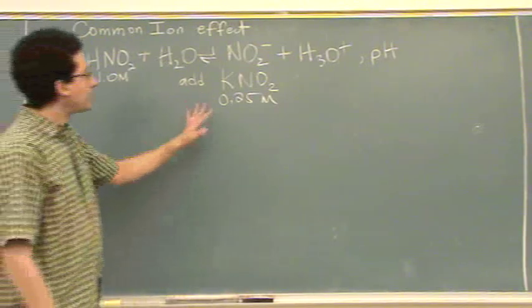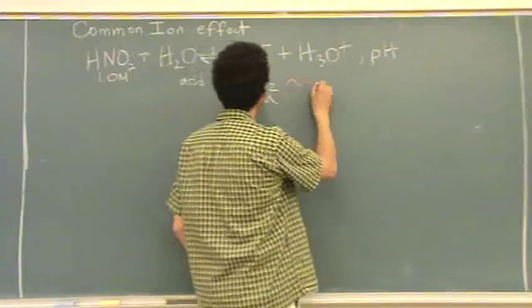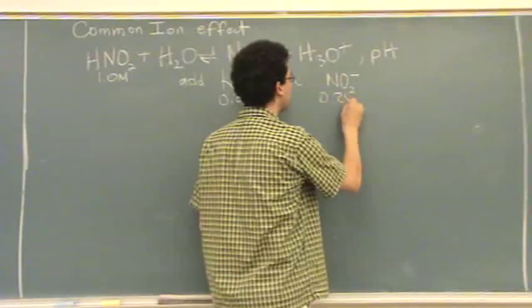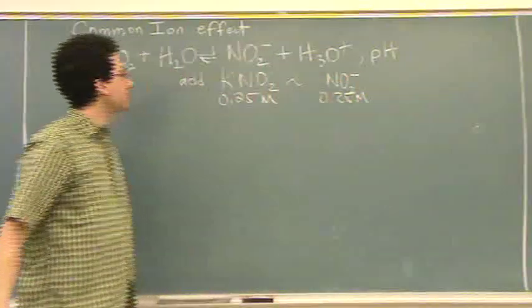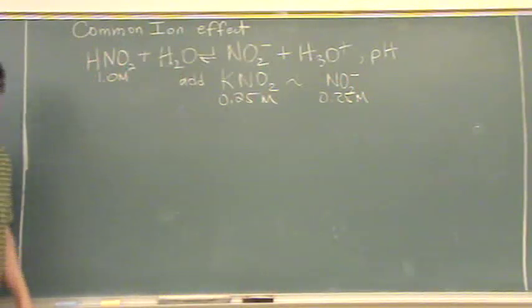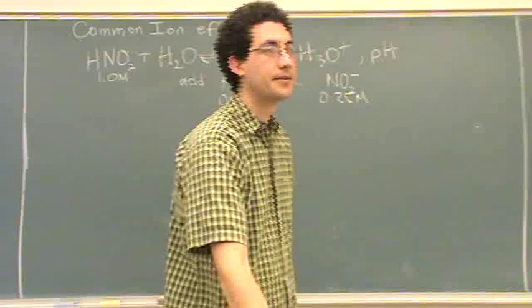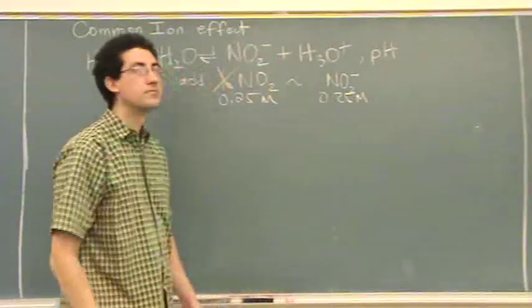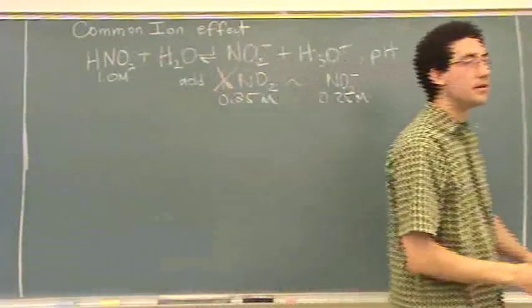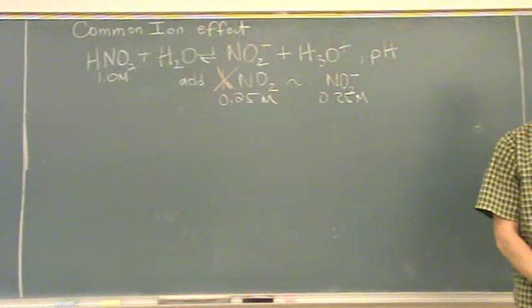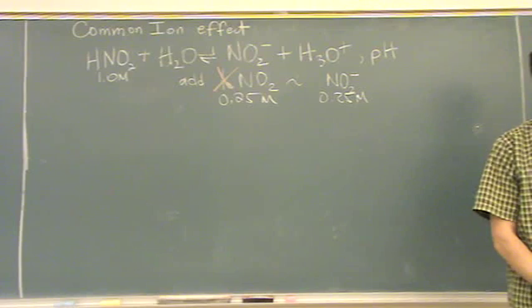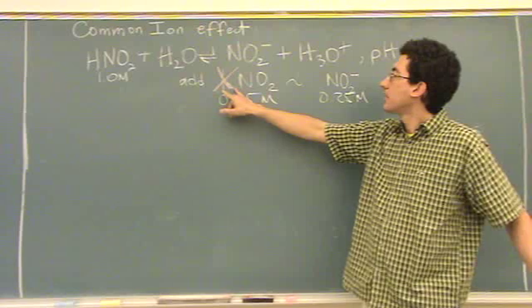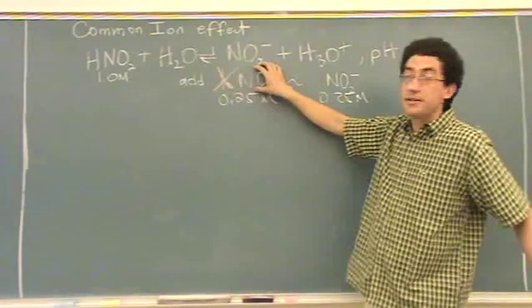So let's just give these some fake molarity. Let's say this is 1.0 molar, and let's say this is 0.25 molar. Well, adding this is the same as adding NO2 minus 0.25 molar. Why is that? K is a spectator, so you can ignore it.